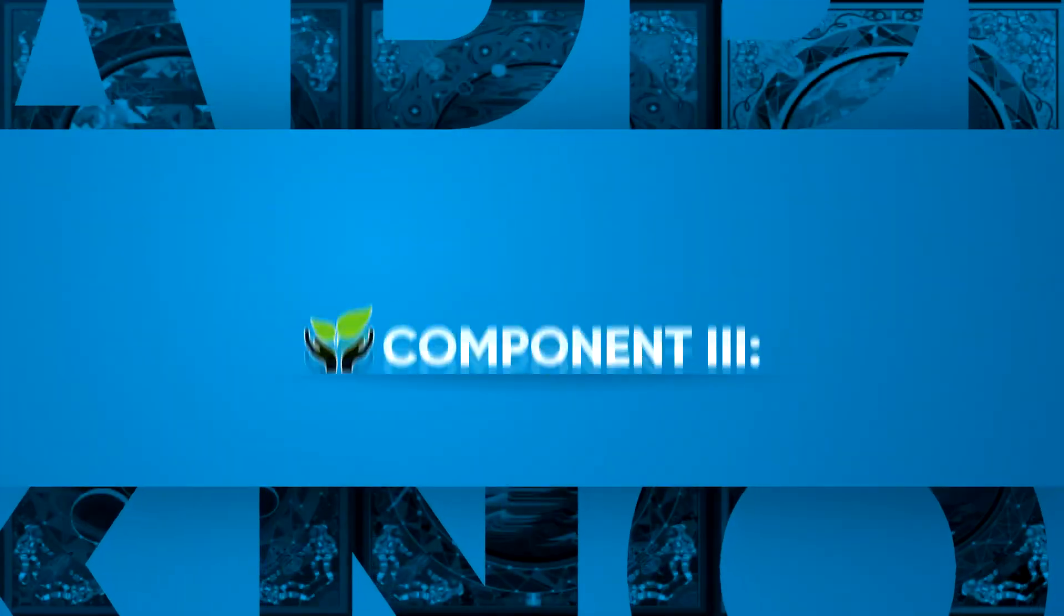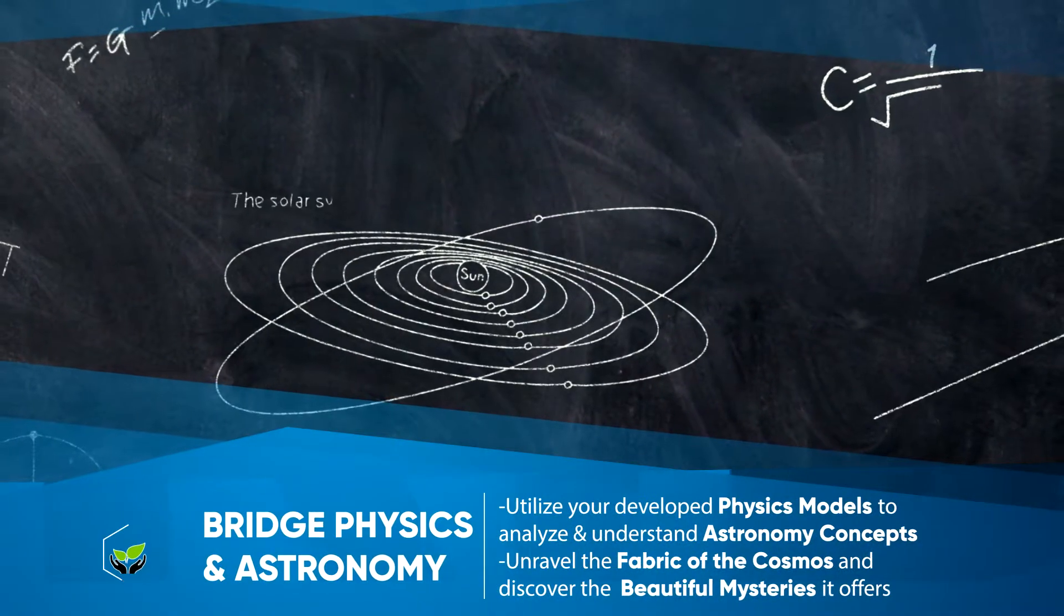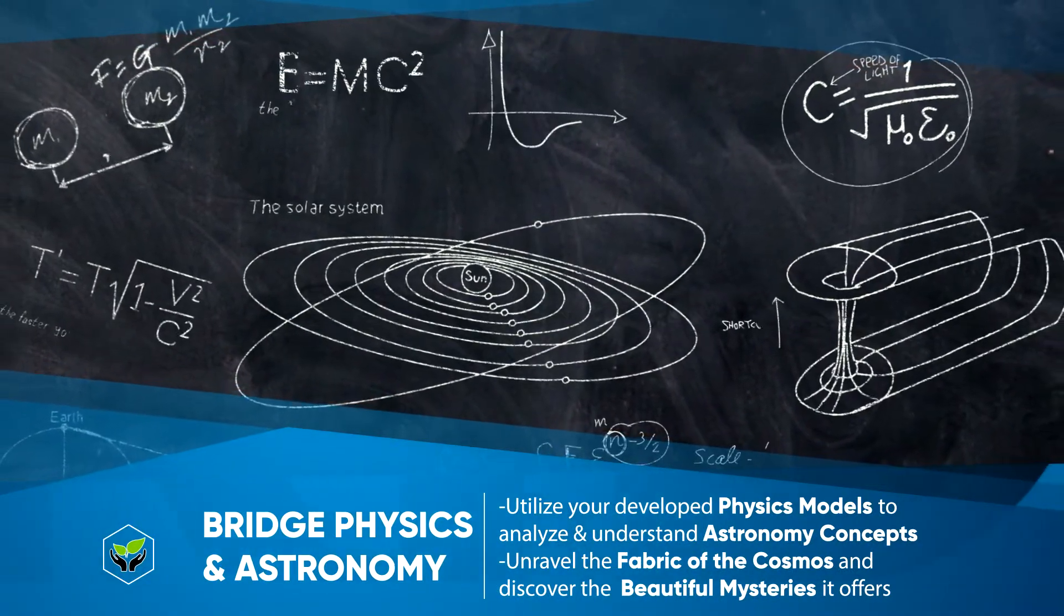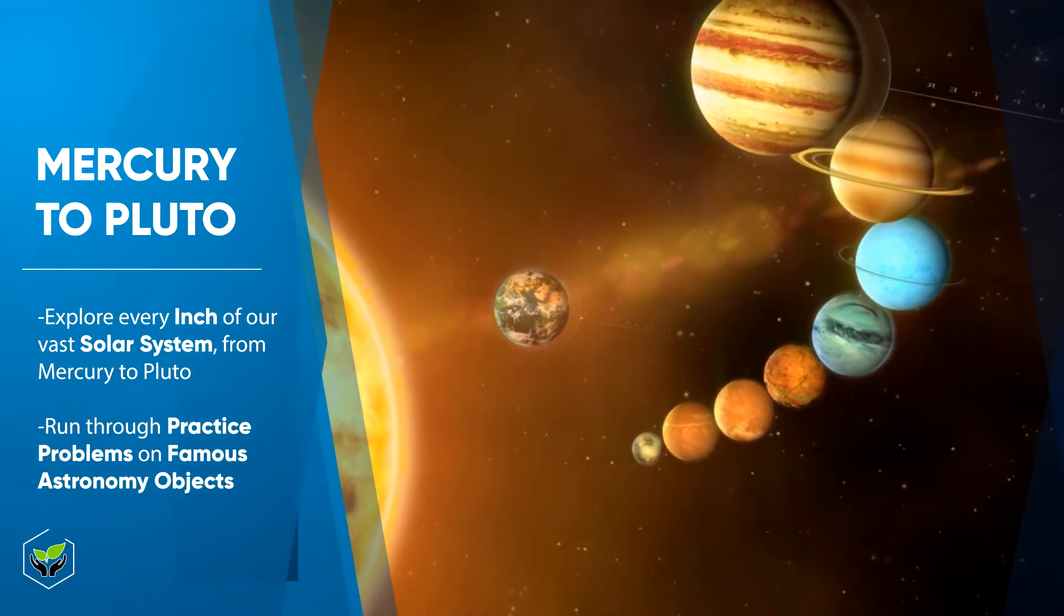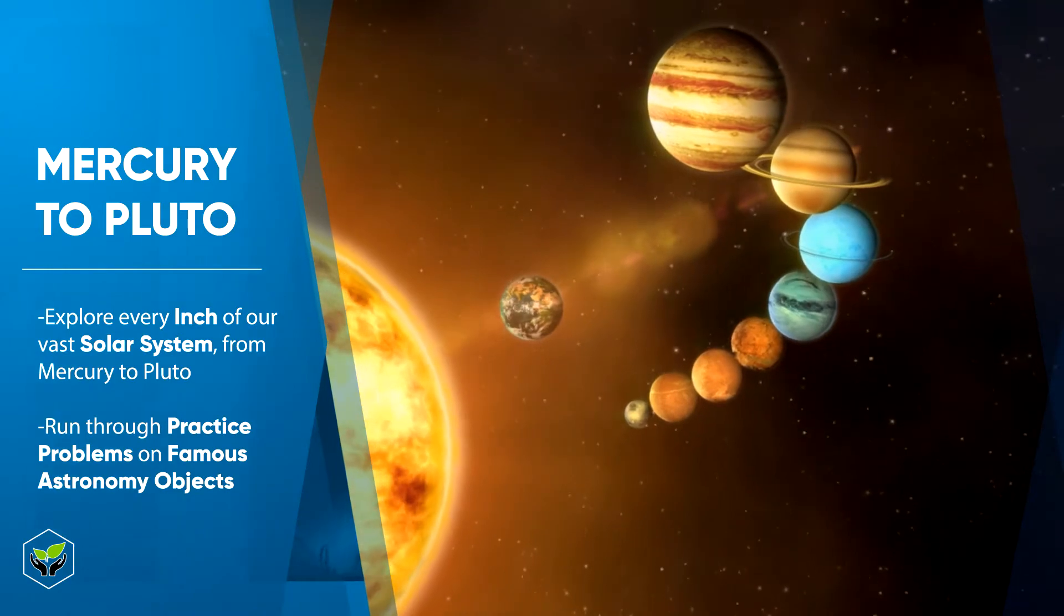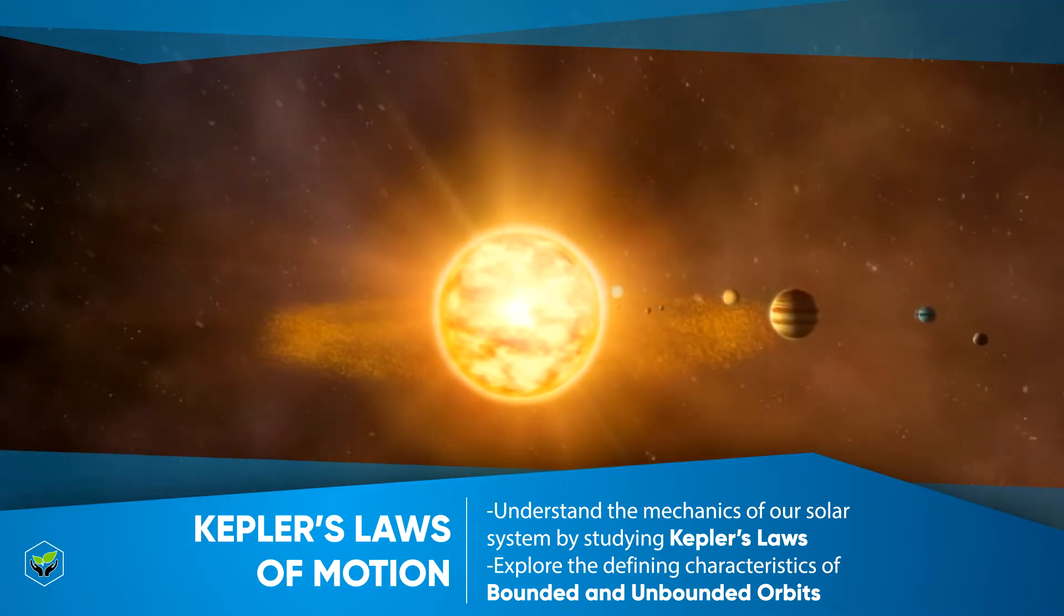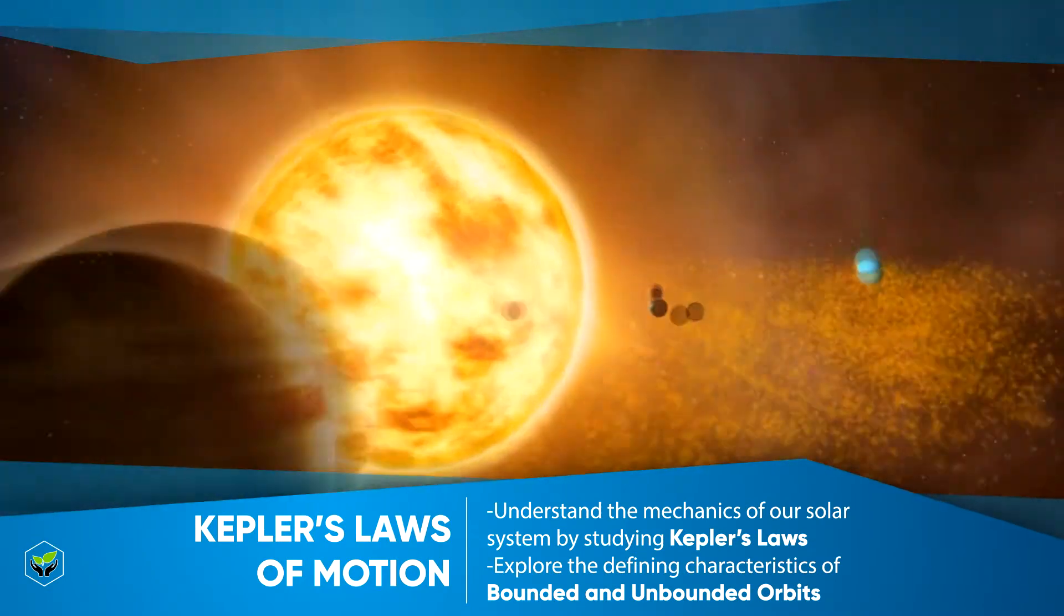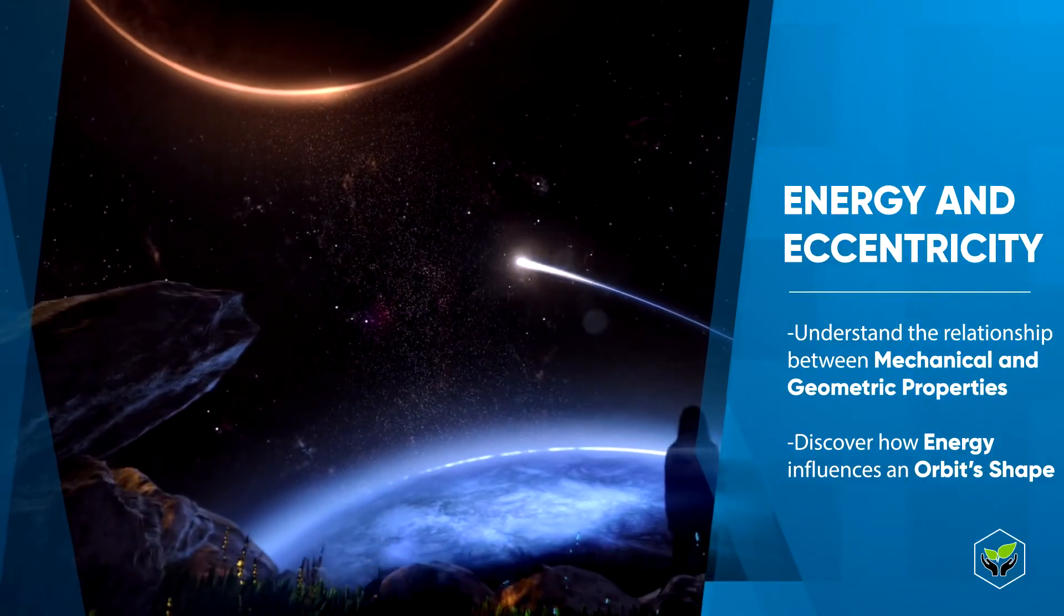So in section three, we're going to take all the knowledge and skills you've been developing and finally put them to good use. This is the fun part of the course, where we start to bridge physics and astronomy concepts, as we take a look at everything from Mercury to Pluto and even the famous Halley's Comet. Some of the topics we'll explore include Kepler's Law of Planetary Motion, the defining characteristics of bounded and unbounded orbits, and the relationship between a celestial object's energy and eccentricity.